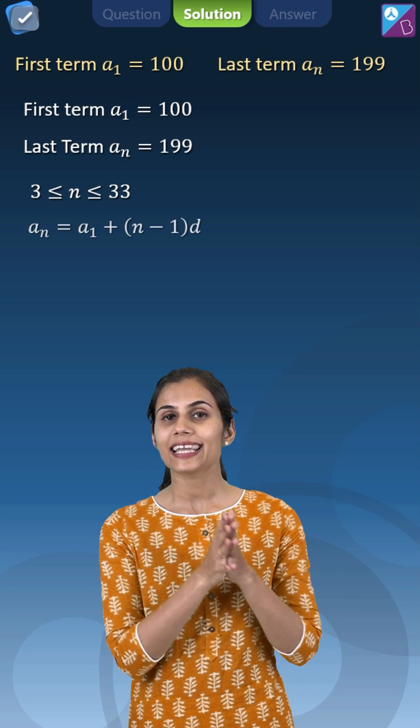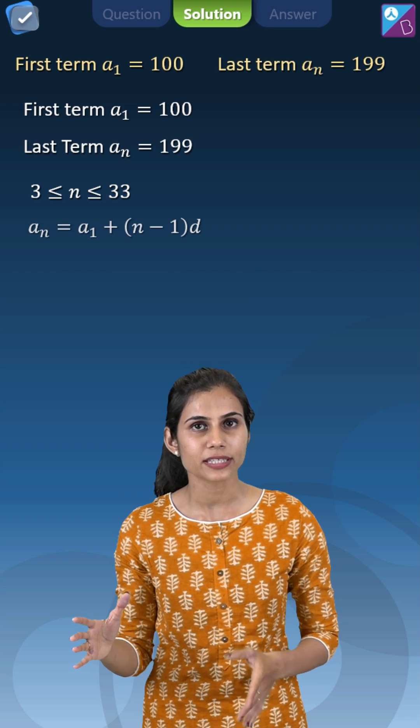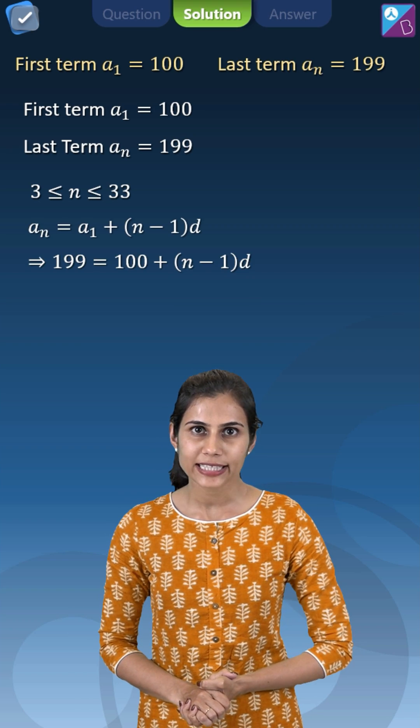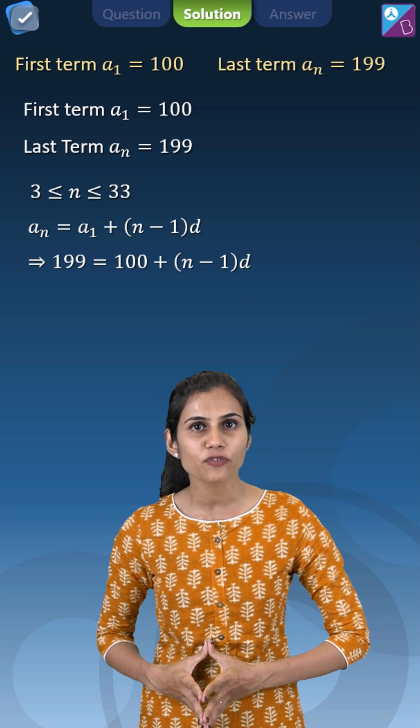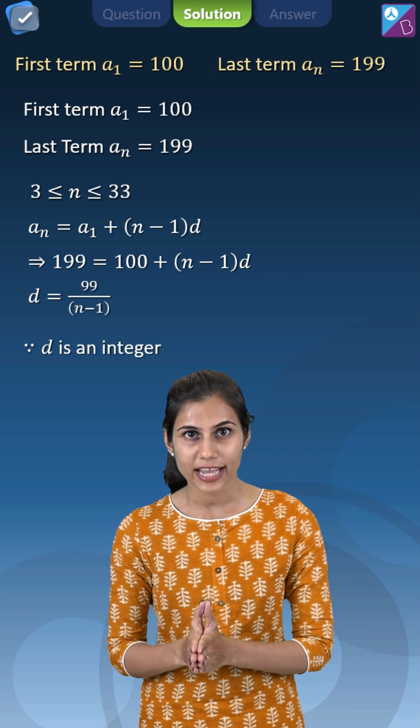We know as a matter of fact that Aₙ will be nothing but first term plus n minus 1 times the common difference. Plug in the value of Aₙ as 199, plug in the value of A₁ as 100, and what you get as the expression for D is 99 upon n minus 1.